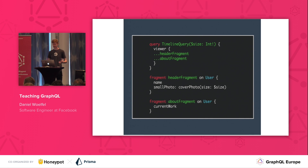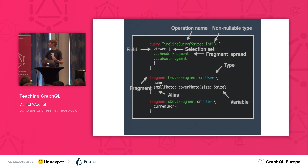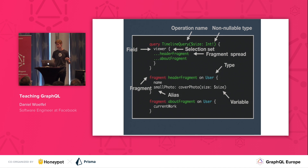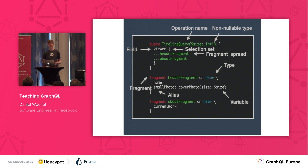GraphQL is similar. Take a relatively simple query you might see in any application — it's not too bad, but when you start breaking it down there's a ton of new concepts. You have non-nullable types, fragment spreads, variables, and special syntax for aliases. Each of these concepts has to be introduced and motivated separately, or else the person is going to be completely lost and lose interest.